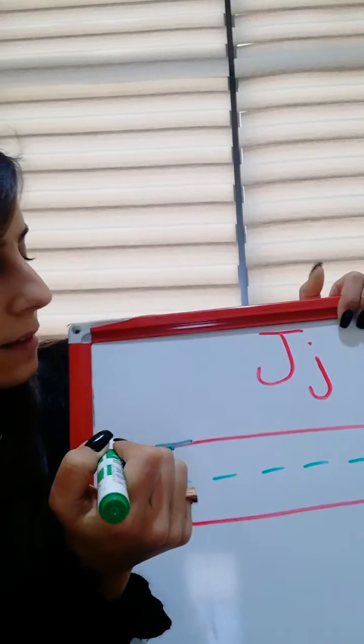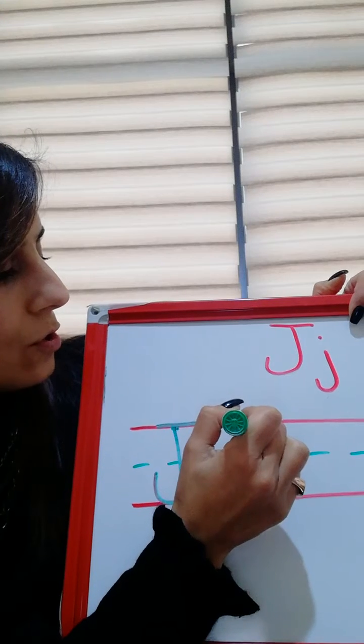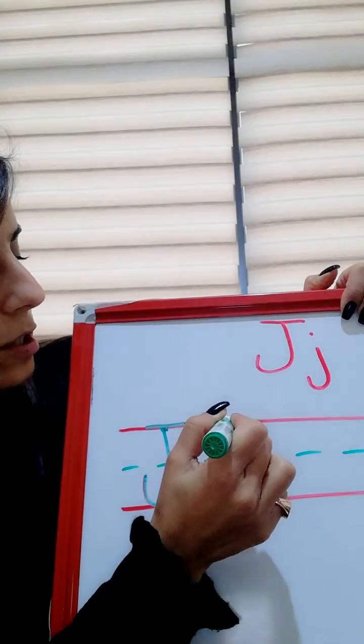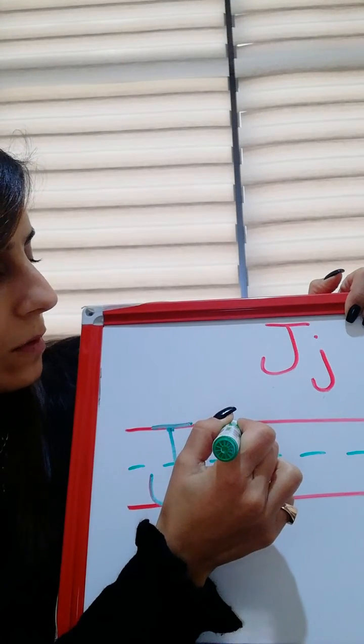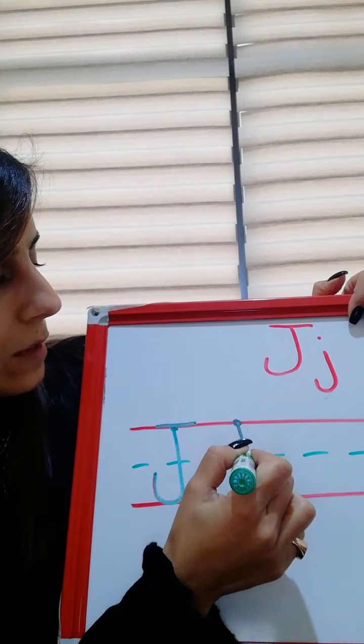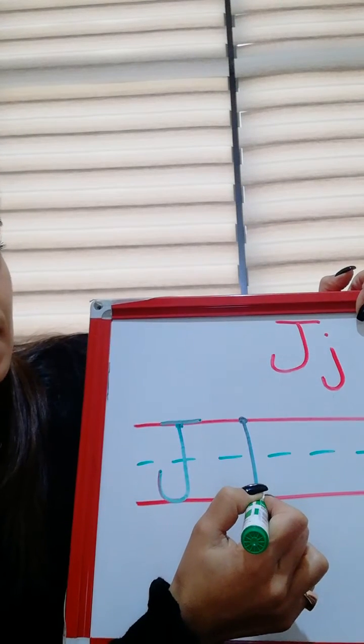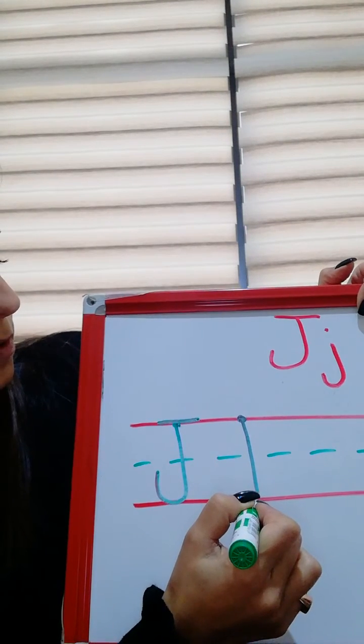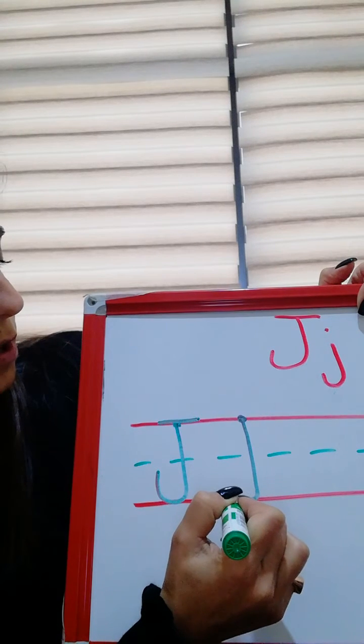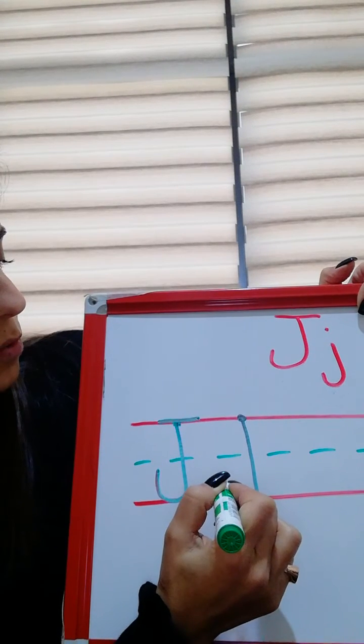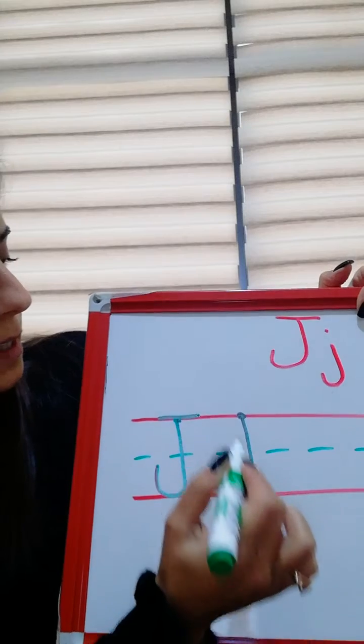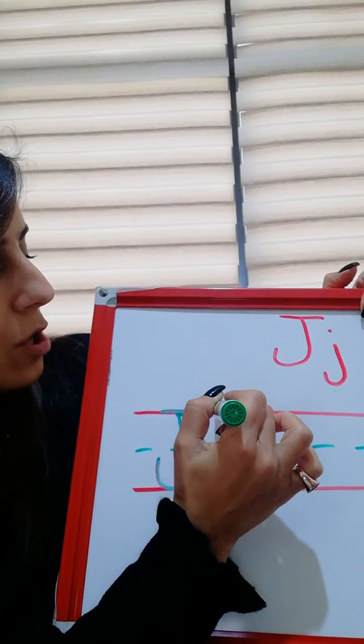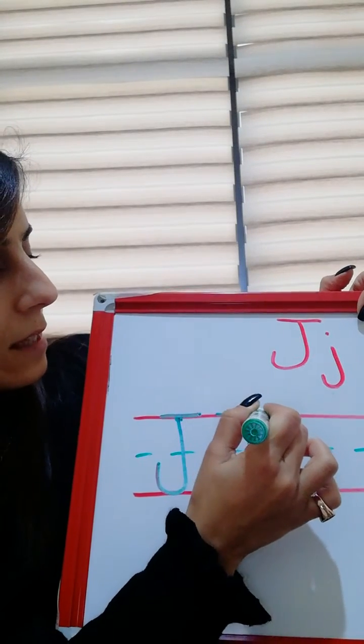So, again, here, you start at the dot, you go down, like this, straight, then you turn, you make a turn or a curve, to the left, and then you go back to the top, and make a horizontal line.